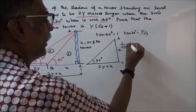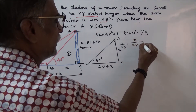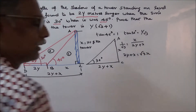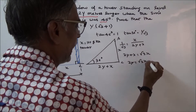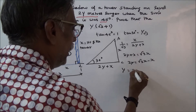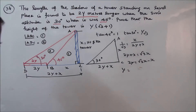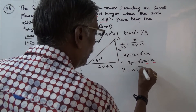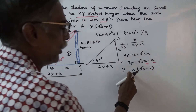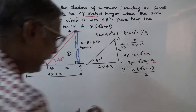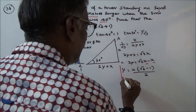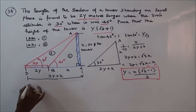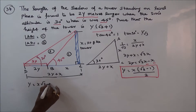So 1 by root 3 equals x by (2y plus x). Simplifying: 2y plus x equals root 3 into x, so 2y equals root 3 times x minus x. Taking x common: 2y equals x into (root 3 minus 1). Therefore y equals x into (root 3 minus 1) divided by 2.